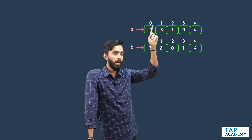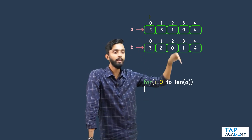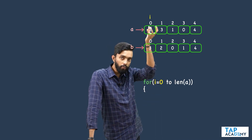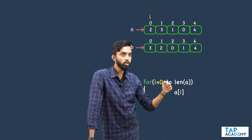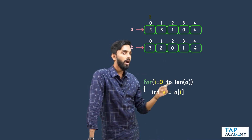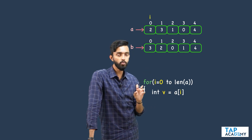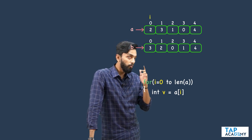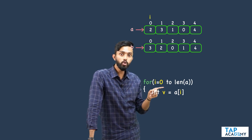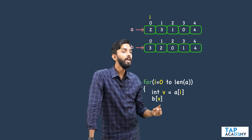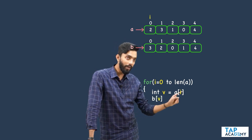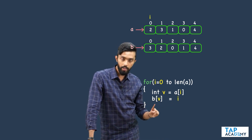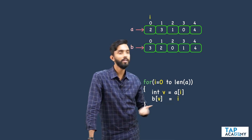I will run a loop with variable i which begins from 0 and goes to the end of the array. Inside this, I will take the value at the ith index and store it inside a variable called v. Now i has the index and v has the value. In my array b, v should become the index and i should become the value. So: b of v equals i. Store the value i in array b at index v. That's it — simple code.